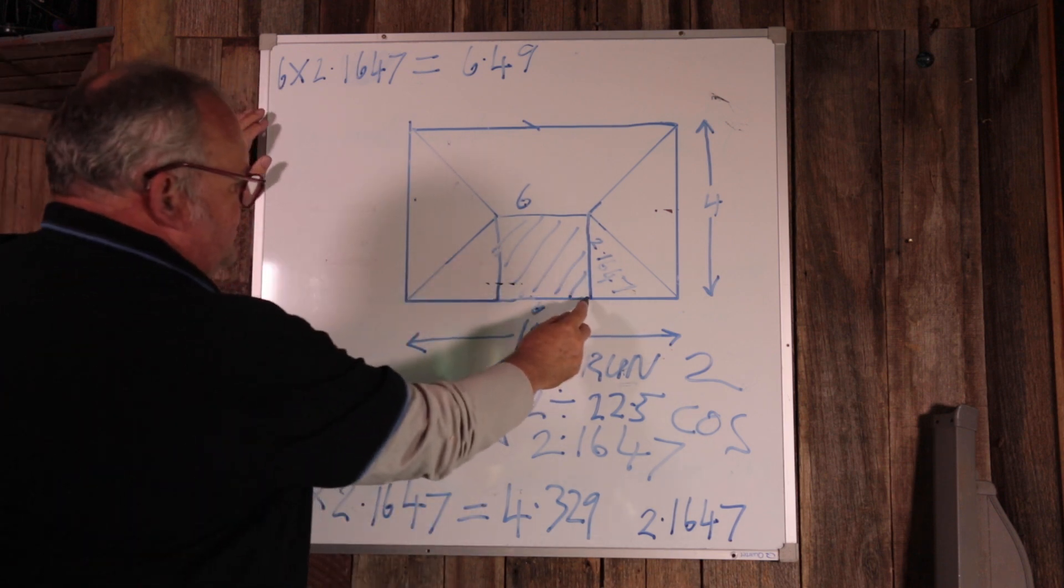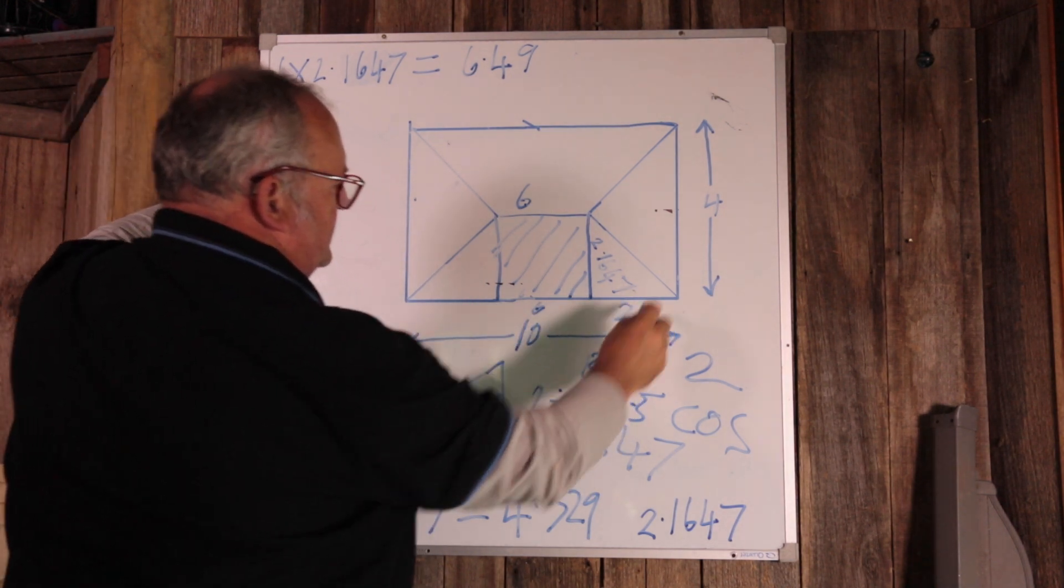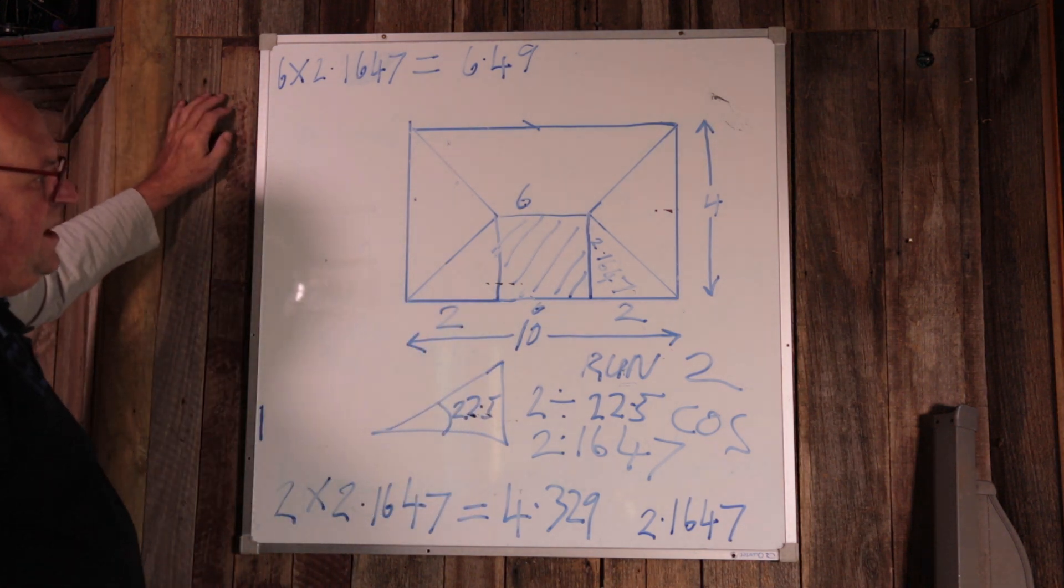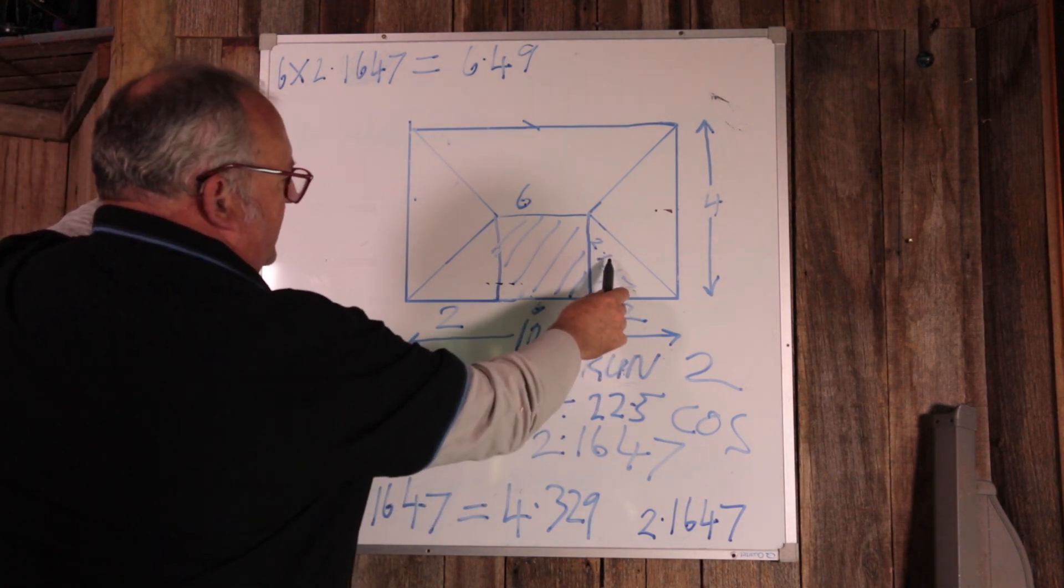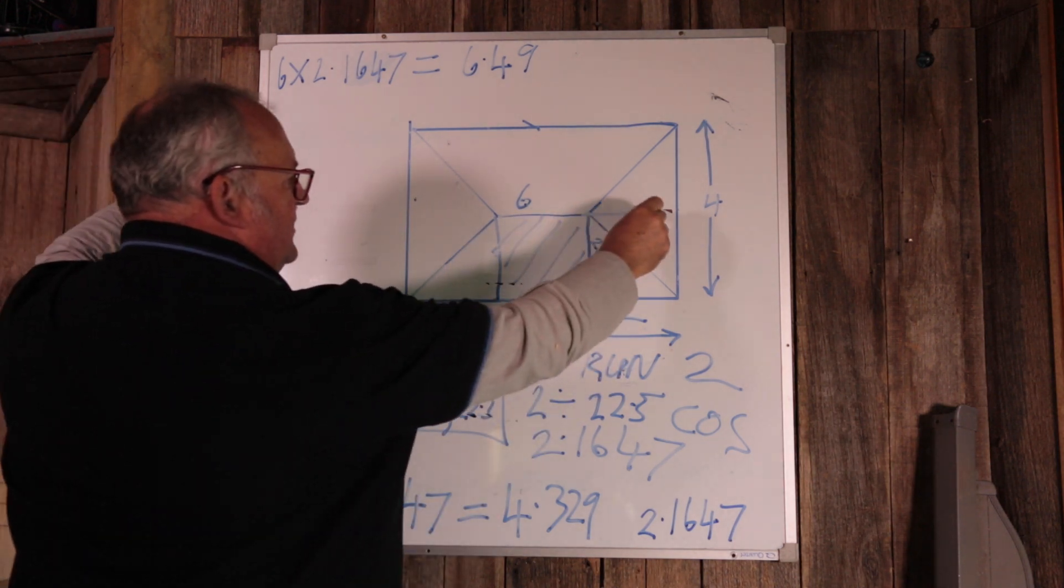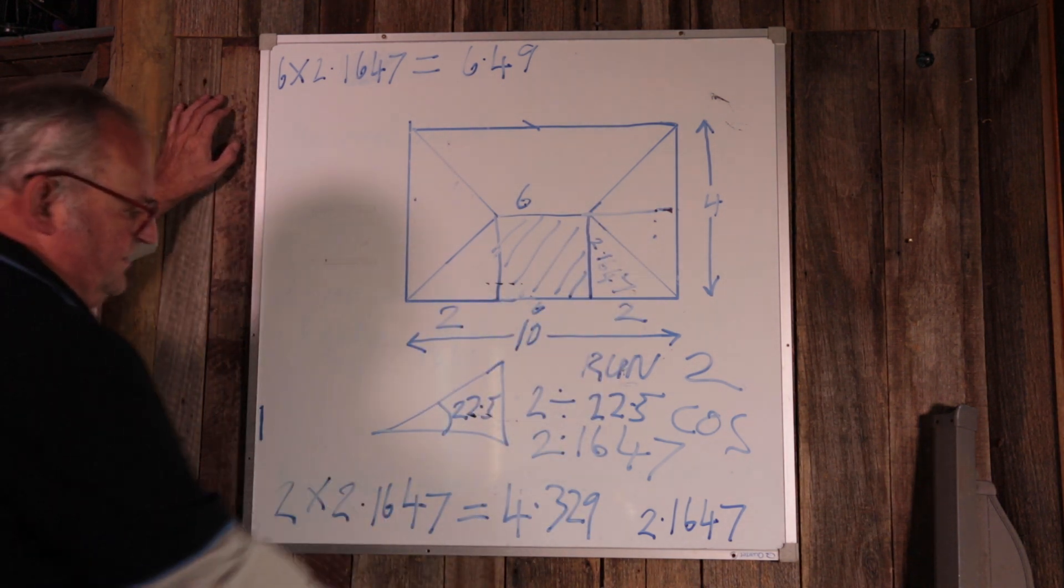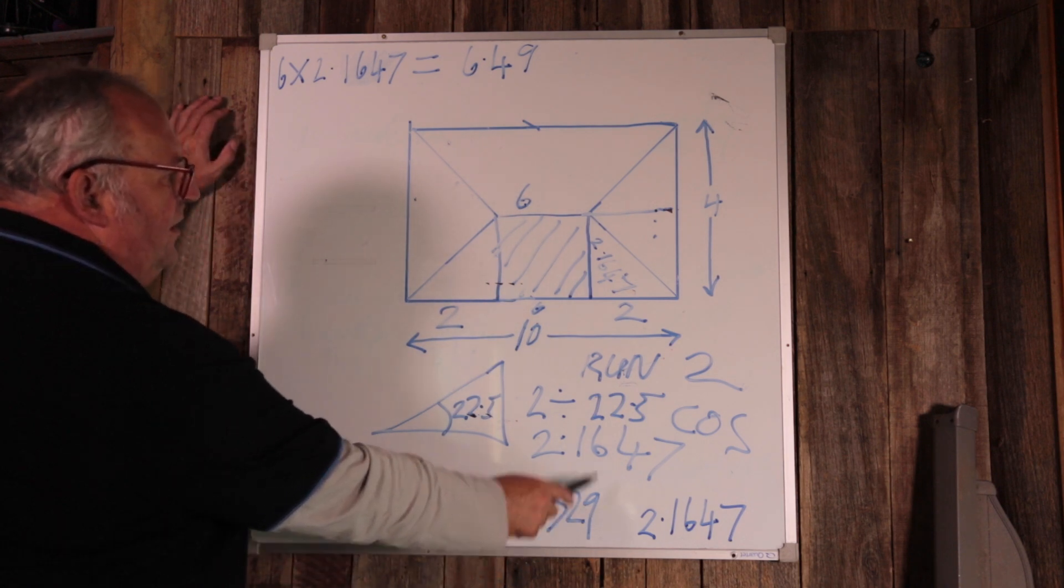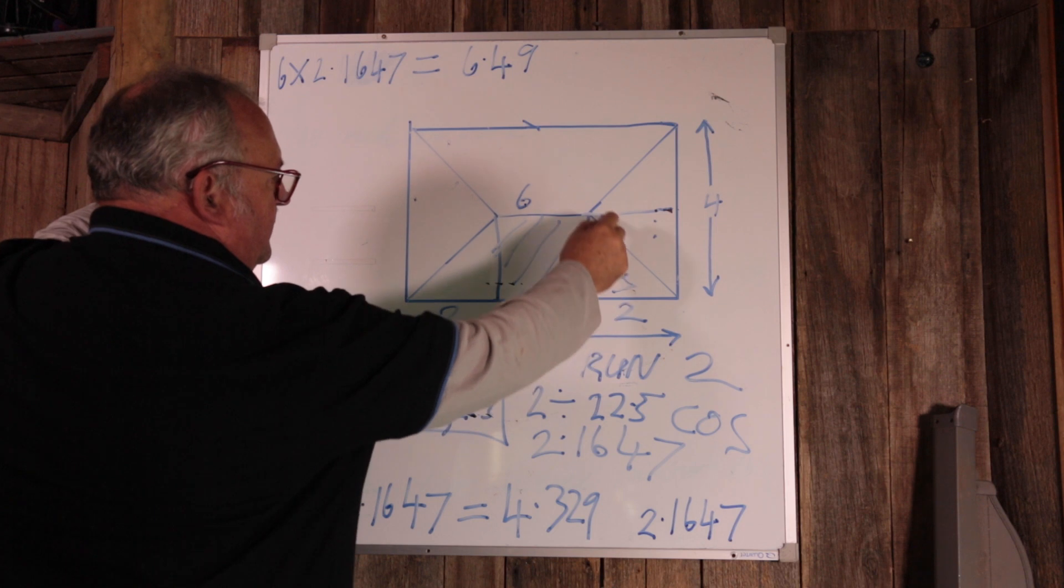We know if that's 6 meters and that's 10 meters, then these must be 2 meters and 2 meters. So the simple way to work it out is just to do 2 times 2.1647. So we're basically working out those two halves, and 2 times 2.1647 is 4.329 meters for the whole lot there.